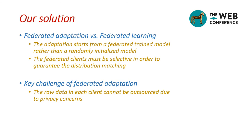Compared to traditional federated learning, federated adaptation has the following differences. First, the adaptation objective is a federated trained model, which means an FL process should be conducted before adaptation begins. Second, instead of using all clients or randomly selecting them as traditional FL does, in federated adaptation the federated clients must be selective in order to guarantee distribution matching.